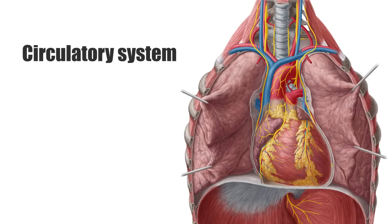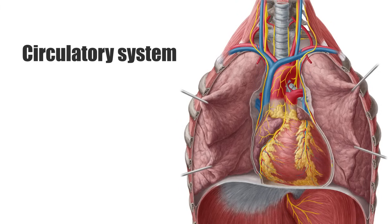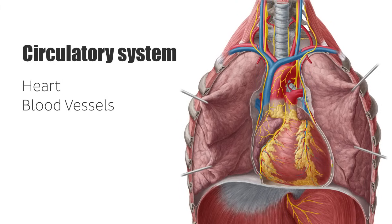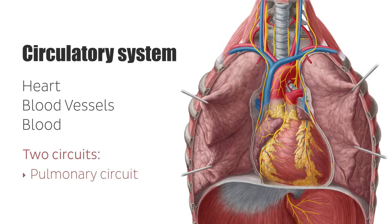The circulatory system is comprised of the heart, the blood vessels, and the blood. It consists of two circuits that carry blood around: the smaller being the pulmonary circuit, which runs between the heart and the lungs, and the larger being the systemic circuit, which runs between the heart and the peripheral tissues.